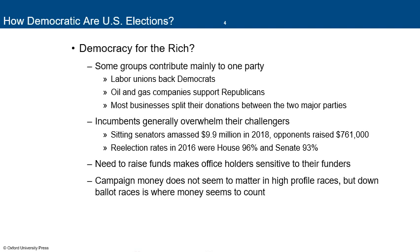So have we become a democracy for the rich? Most groups continue to contribute mainly to one party. Labor unions have traditionally backed Democrats, but in 2016 they tended to back Republicans, giving Donald Trump a significant advantage especially in down-ballot elections. Oil and natural gas companies have always supported Republicans. Most businesses split their donations between the two parties because they don't want to show partisanship.